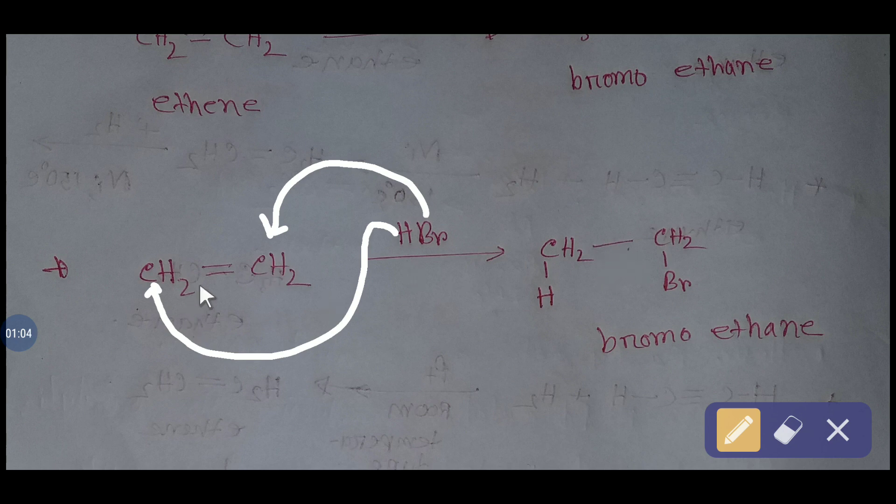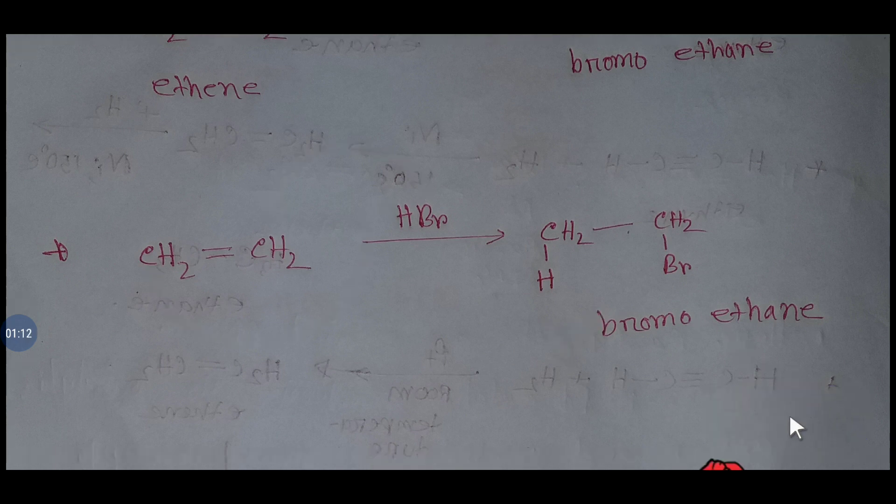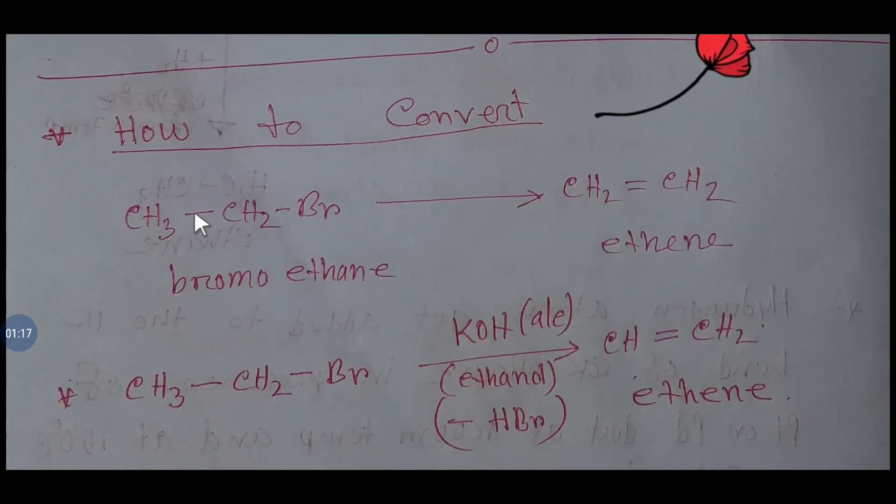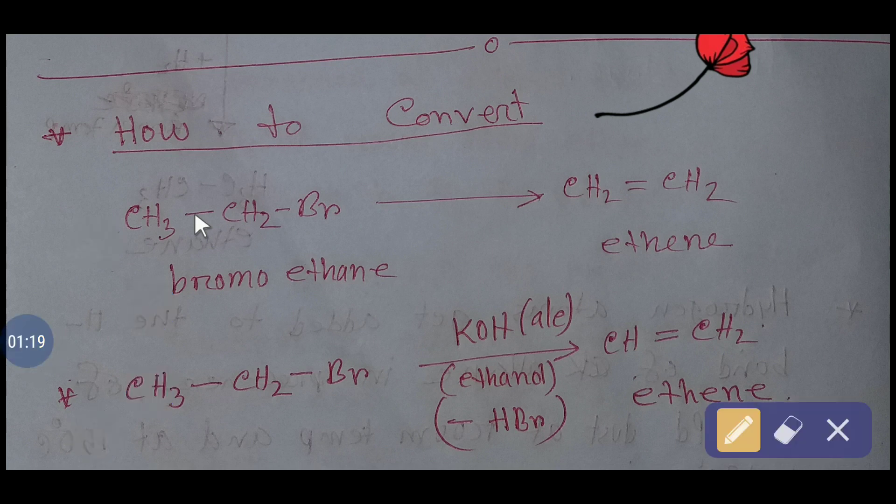So one pi bond will break and we'll get bromoethane. Now we will learn how to convert bromoethane back to ethene.